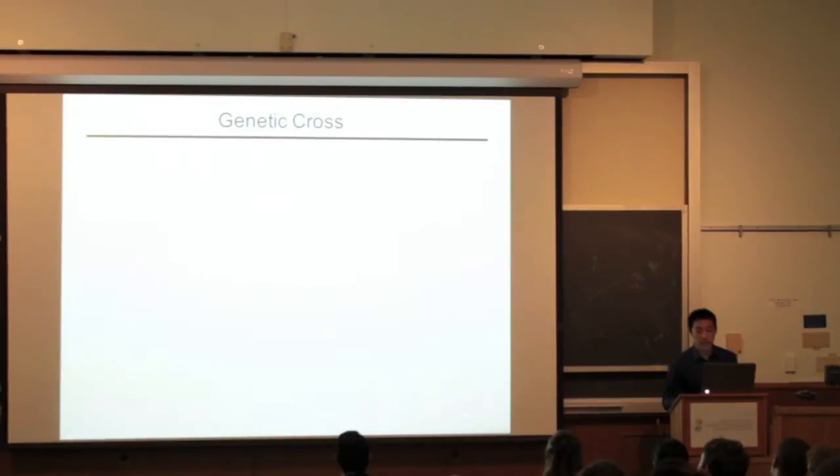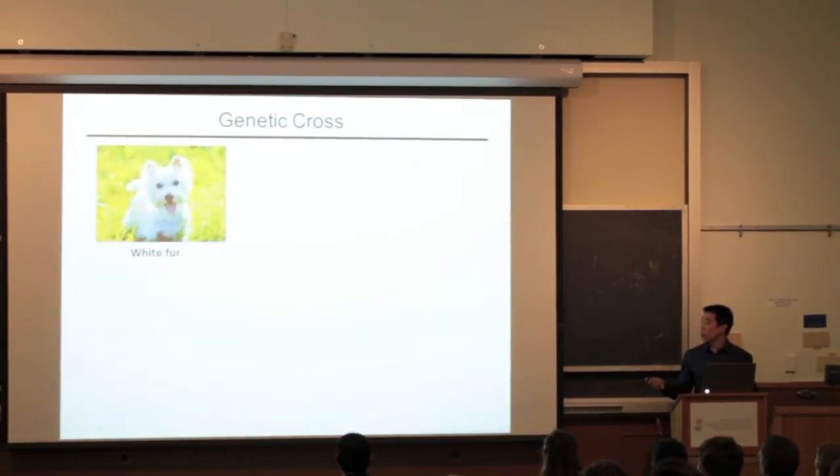To do this, I utilize a basic genetic principle called the genetic cross. The general idea is this. You have a dog with white fur, and you'd really like to see what this dog with white fur would look like with all the other dog traits.